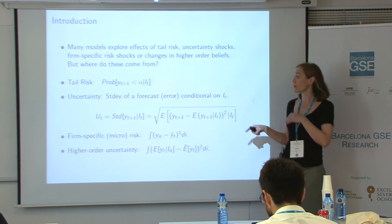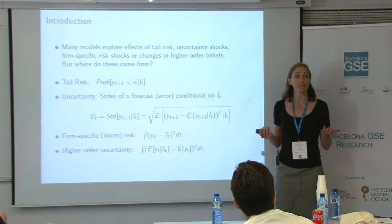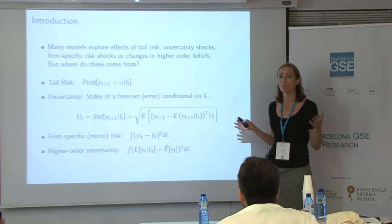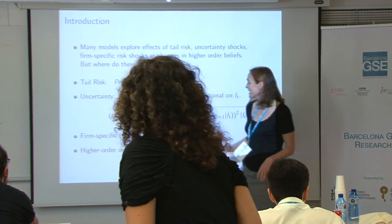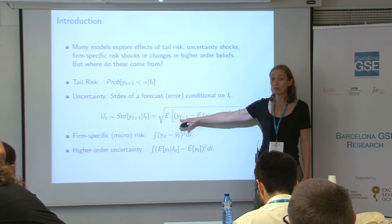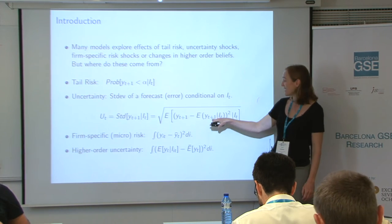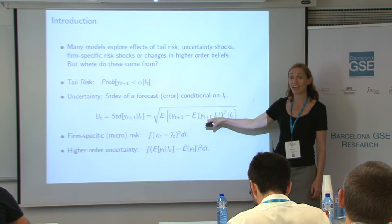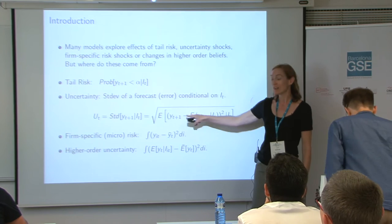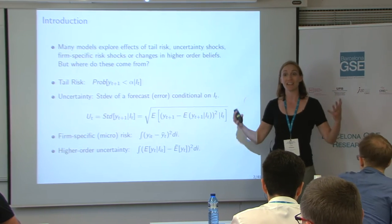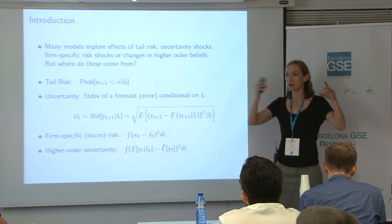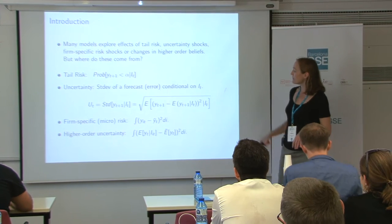Uncertainty, or macro uncertainty, is the standard deviation of your forecast error — how far do you think your forecast is likely to be from the truth? So uncertainty is a conditional standard deviation: it's the square root of the expected squared forecast error. How far will my forecast be from the truth, on average, in a squared, square-root sense?